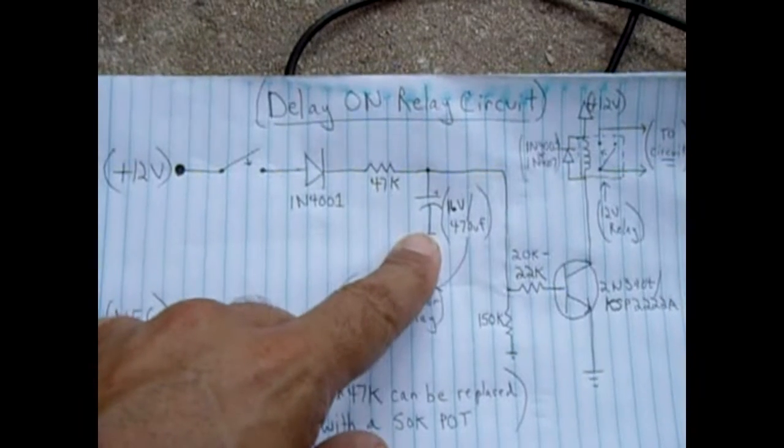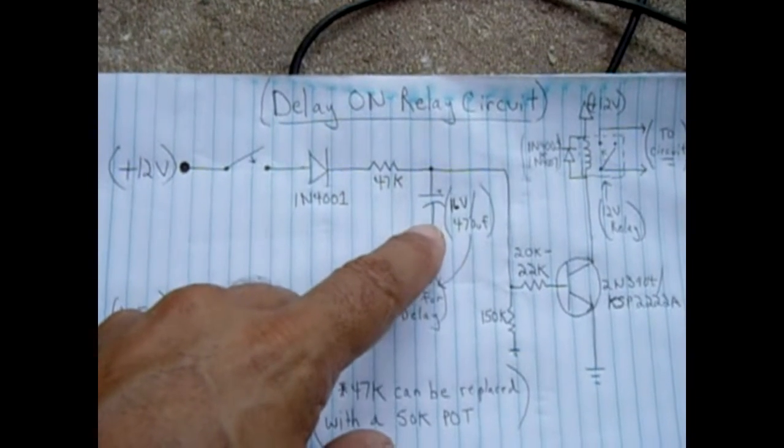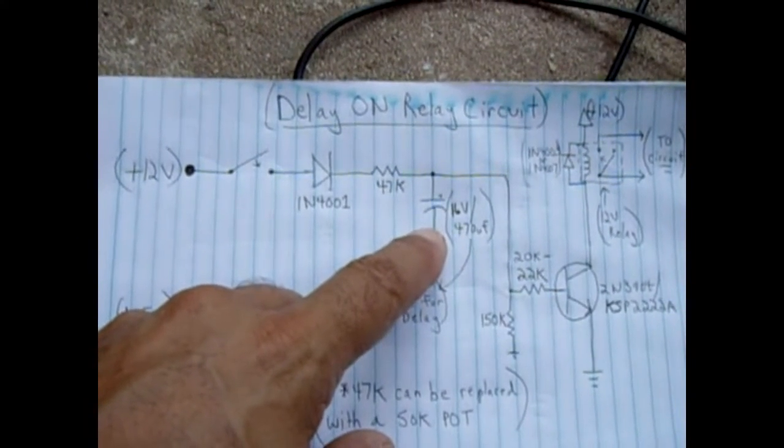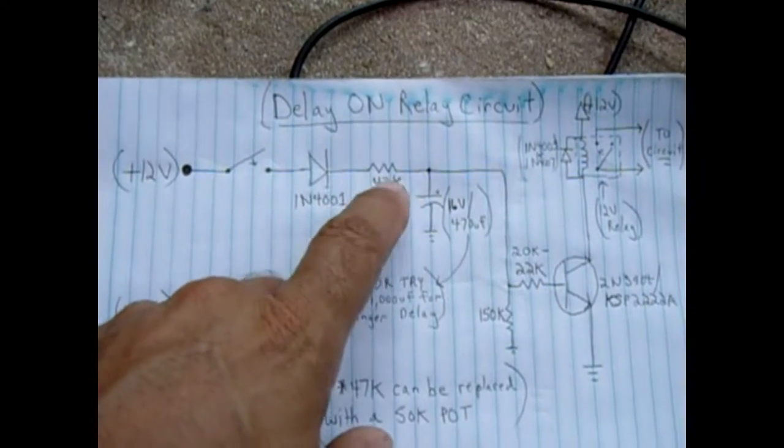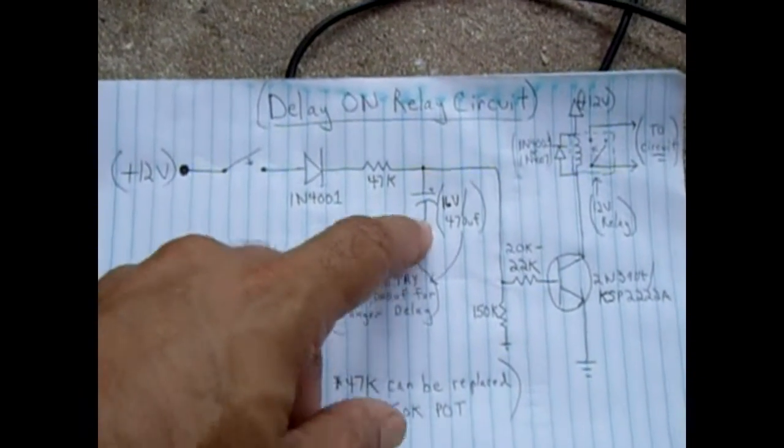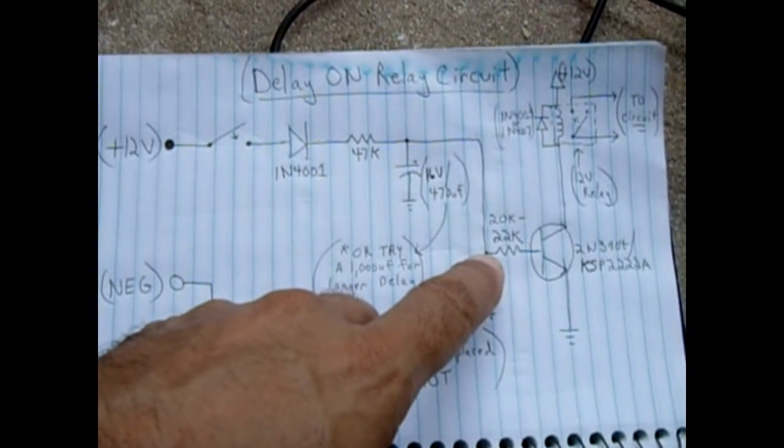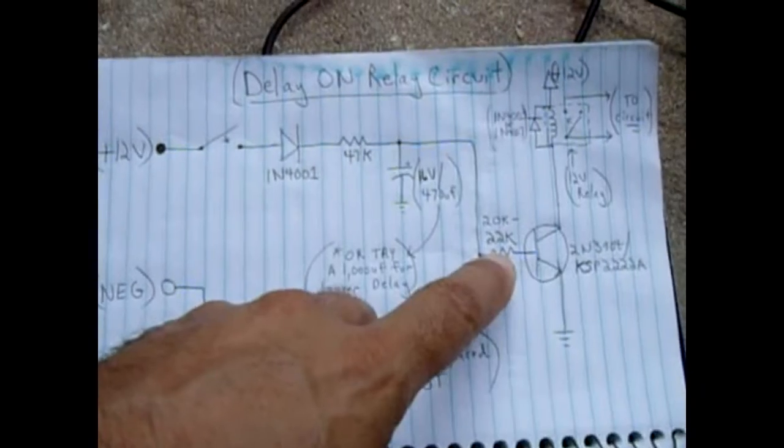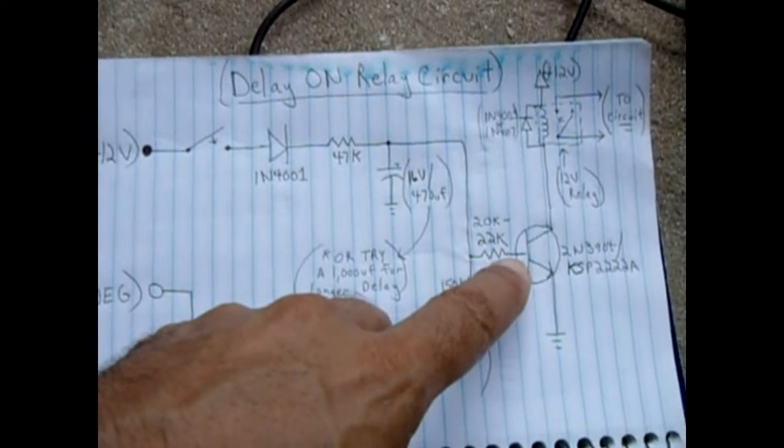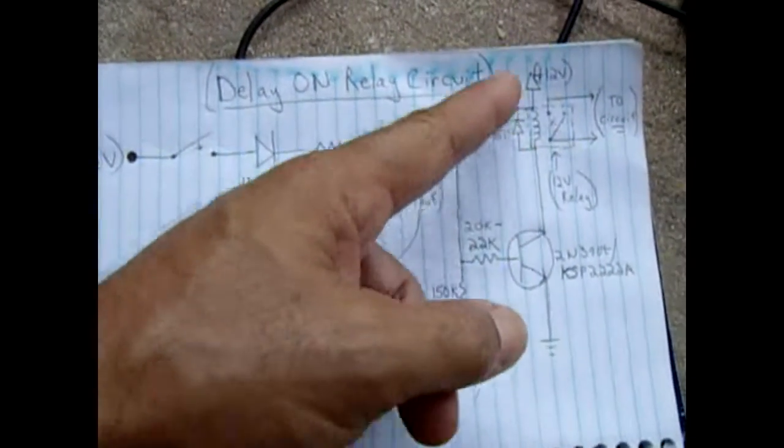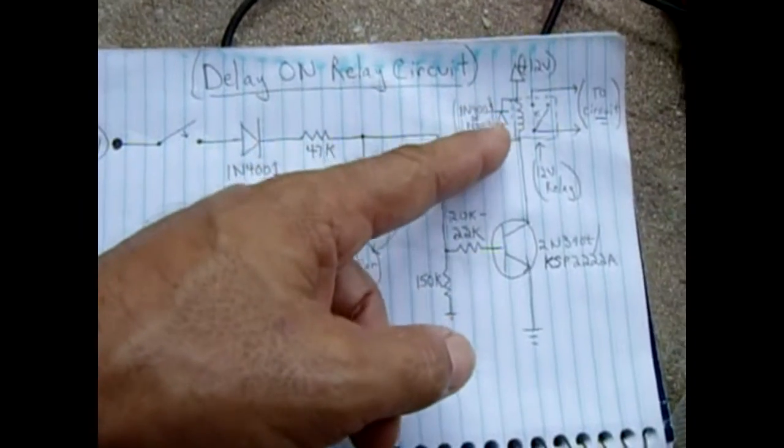Current flows through the diode and through a 47k resistor which slowly charges this capacitor up, so it's going to take time to charge. This is where the delay-on comes in. As it slowly charges the capacitor, once the capacitor charges it will go through the 20k resistor into the base of the transistor, turning it on and allowing the current to flow through the relay coil to ground.